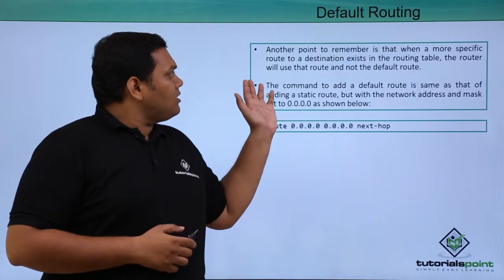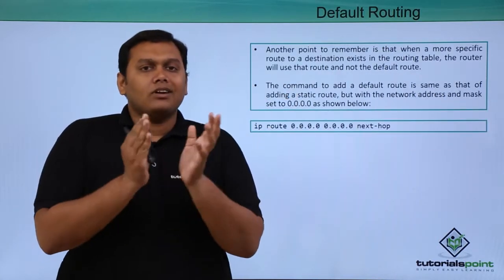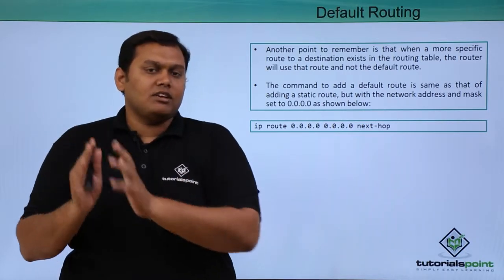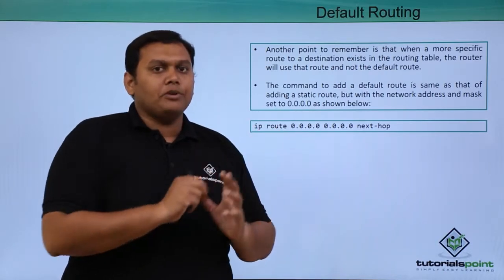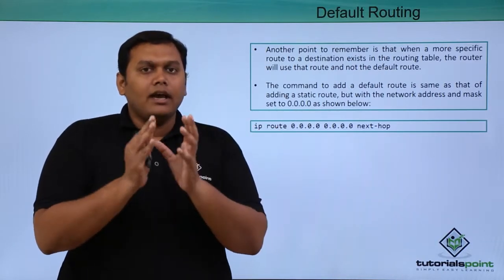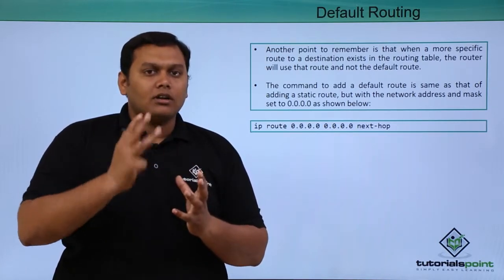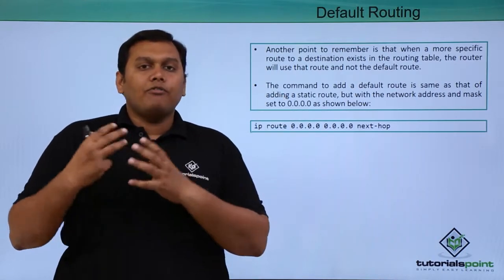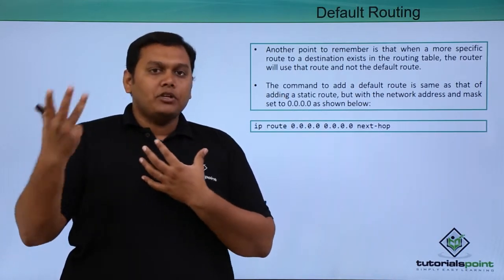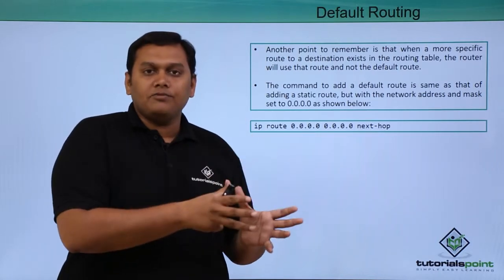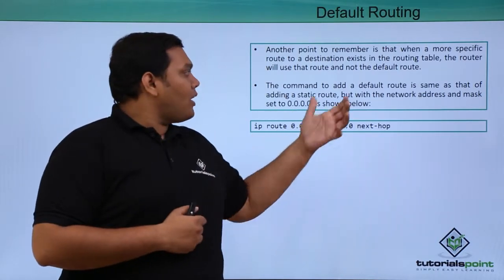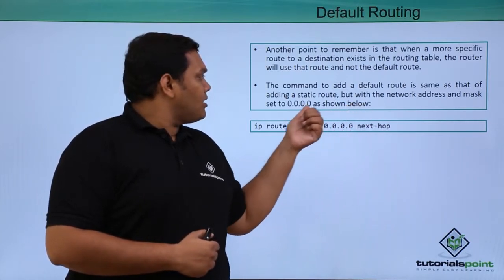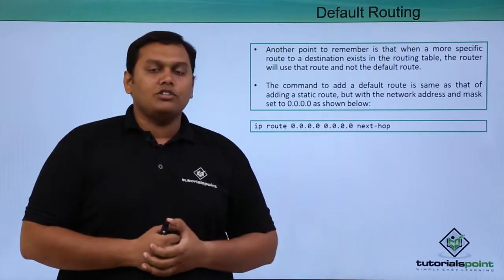When a more specific route is available and also a default route is available, the specific route is preferred because it is more specific and well-known for routing. The routing table also selects that route over the default route because that route has more specific routing information. The command to add a default route is the same as for static routing, with the network address and mask set to 0.0.0.0, as shown below.